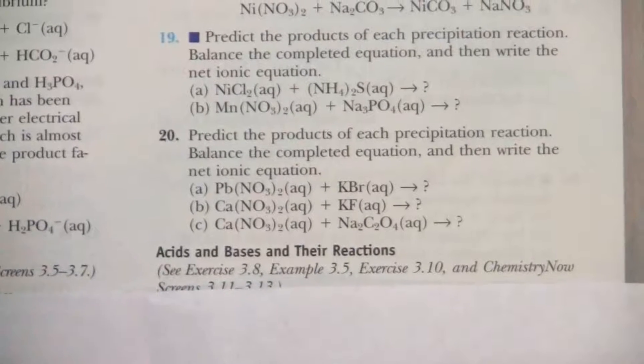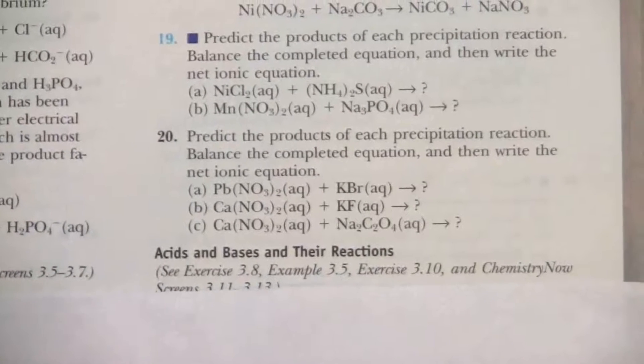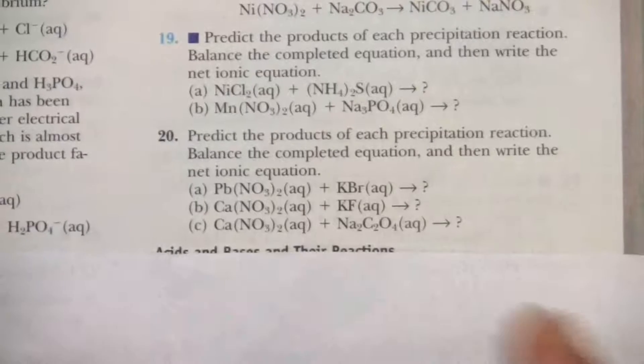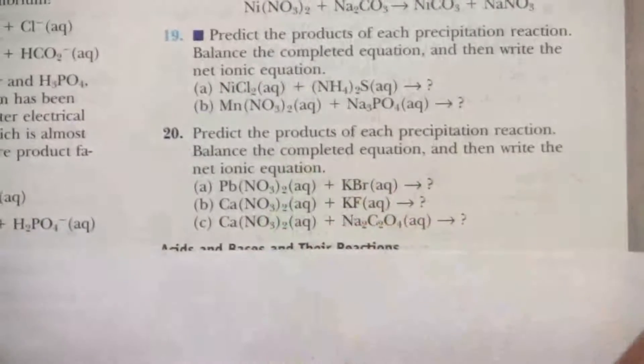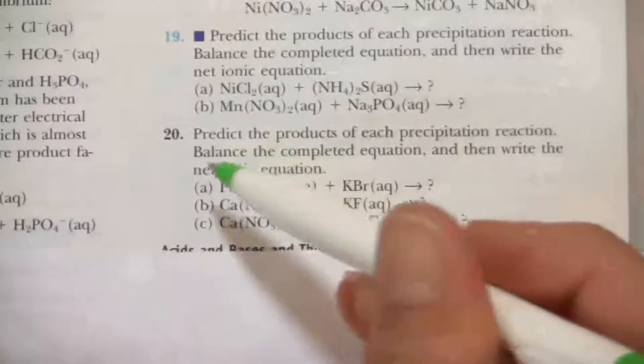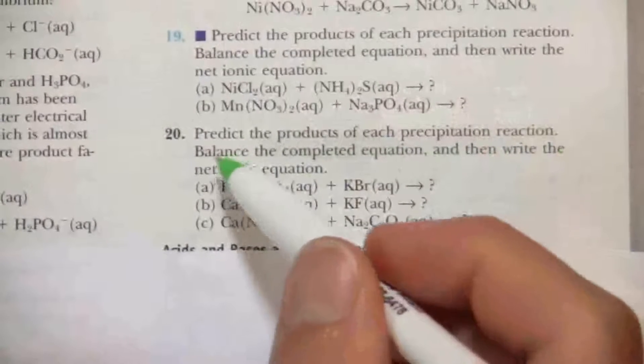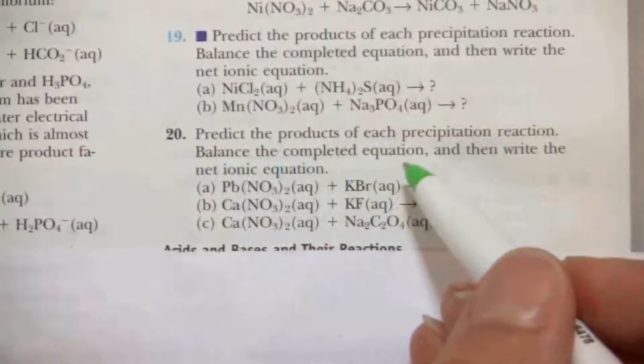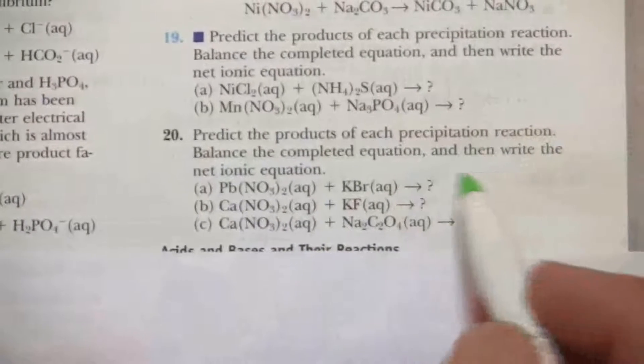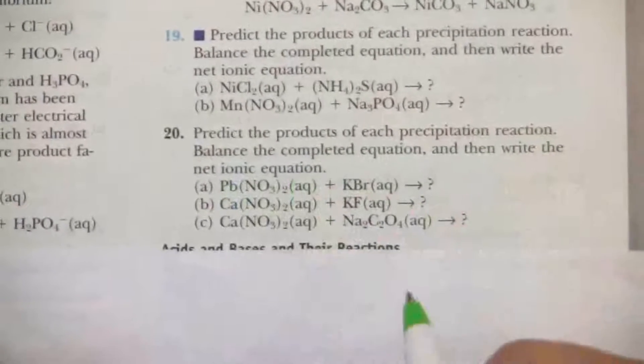All right, so let's do a little prediction of the products of a reaction. In question 20 here, it says predict the products of each precipitation reaction and balance the completed equation. All right, and then we're going to write the net ionic equation.